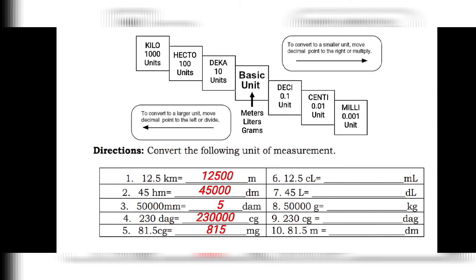Let's now check your answers. 230 dekagram is equal to 23,000 centigram. 81.5 centigram is equal to 815 milligram. 12.5 centiliter is equal to 125 milliliters. 45 liters is equal to 450 deciliters. 50,000 gram is equal to 50 kilogram. 230 centigram is equal to 0.23 dekagram. And the last one, 81.5 meters is equal to 815 decimeters. As you can see, it is very easy to convert units in the metric system, that's why it is the preferred system over the English system.